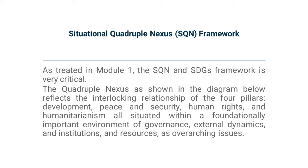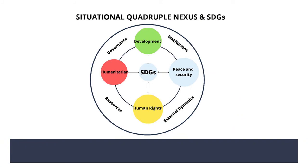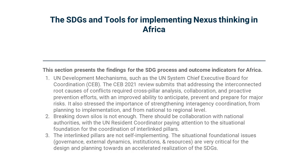As treated in Module One, the SQN and SDGs framework is very critical. The Quadruple Nexus reflects the interlocking relationship of four pillars: development, peace and security, human rights, and humanitarianism — all situated within a foundationally important environment of governance, the three pillars and circumstances, external dynamics, and institutions and resources as overarching issues. This is shown in the diagram, with SDGs at the center and all pillars existing within the Situational Foundation.